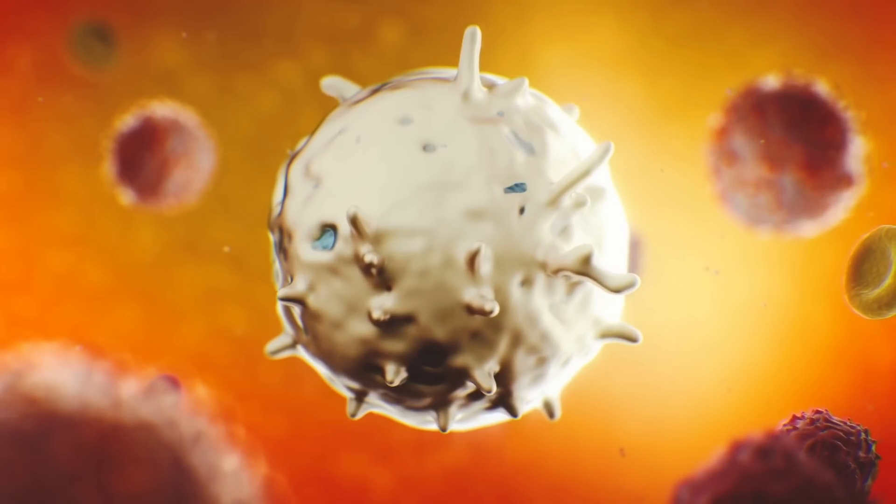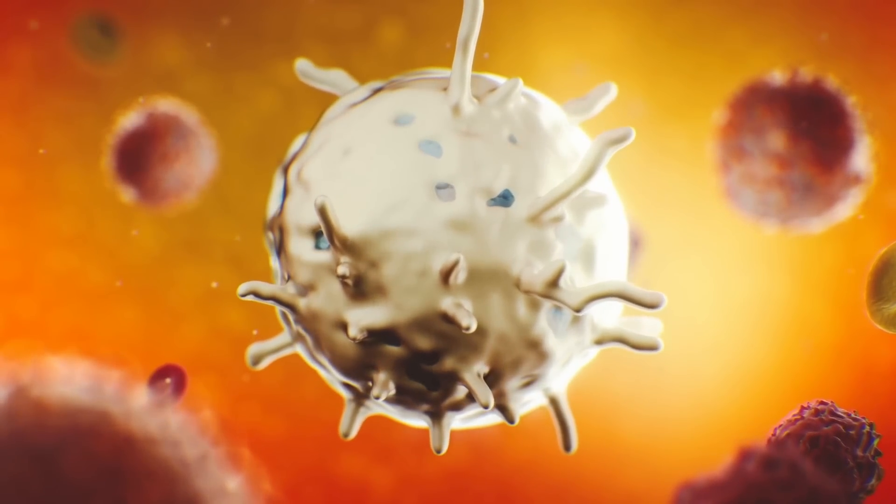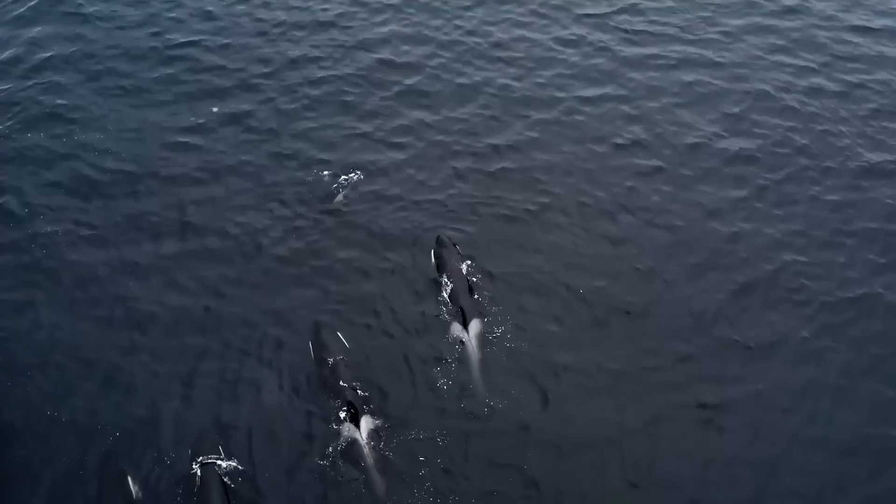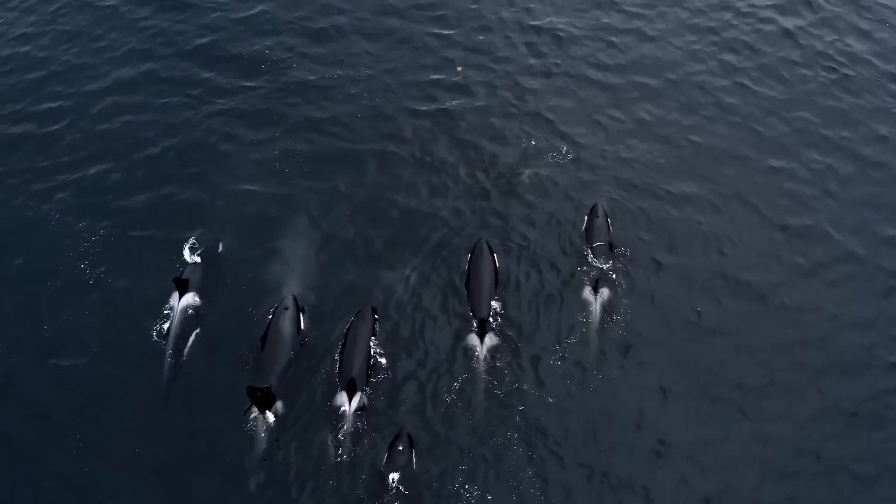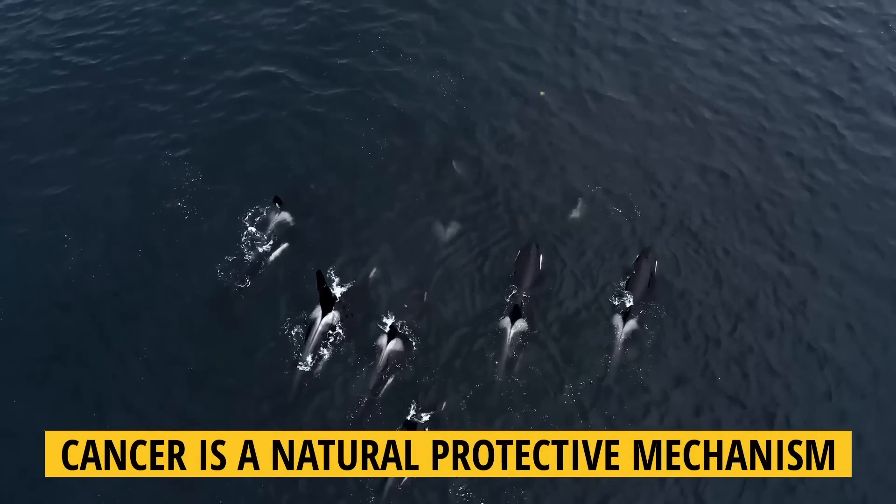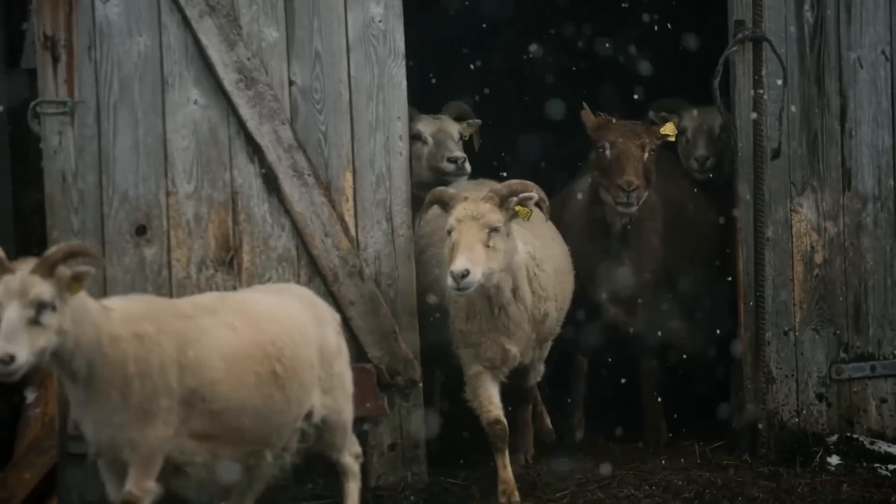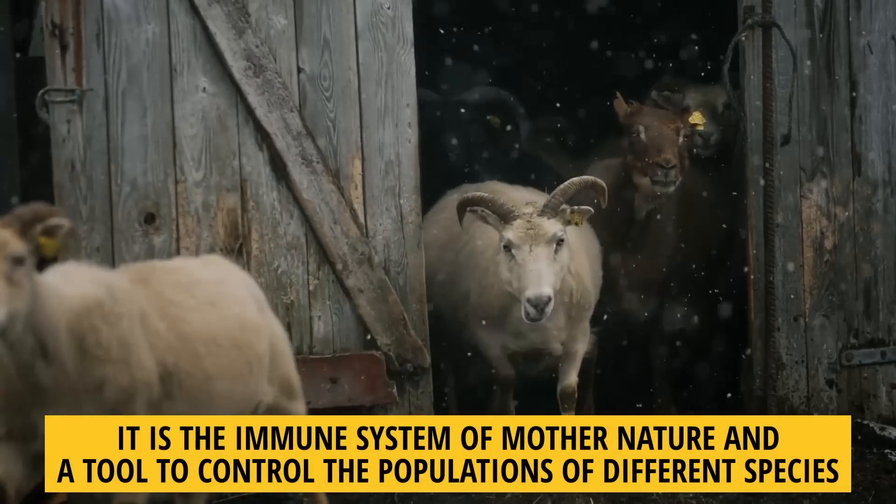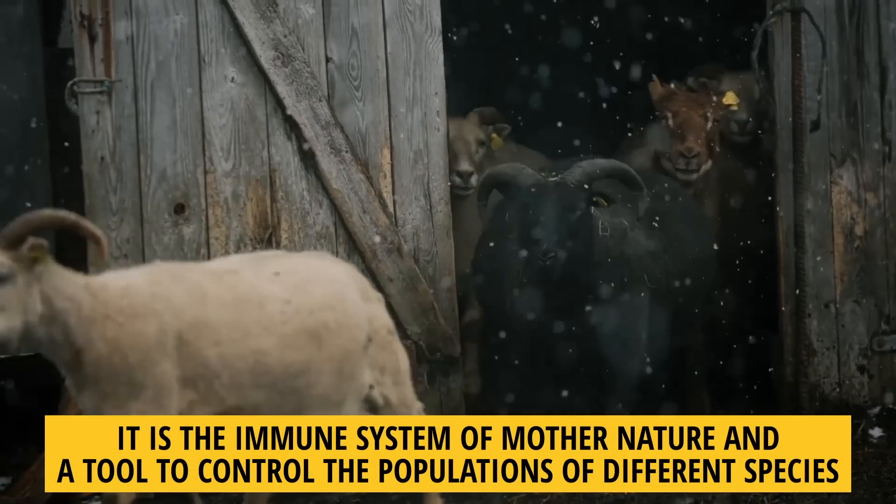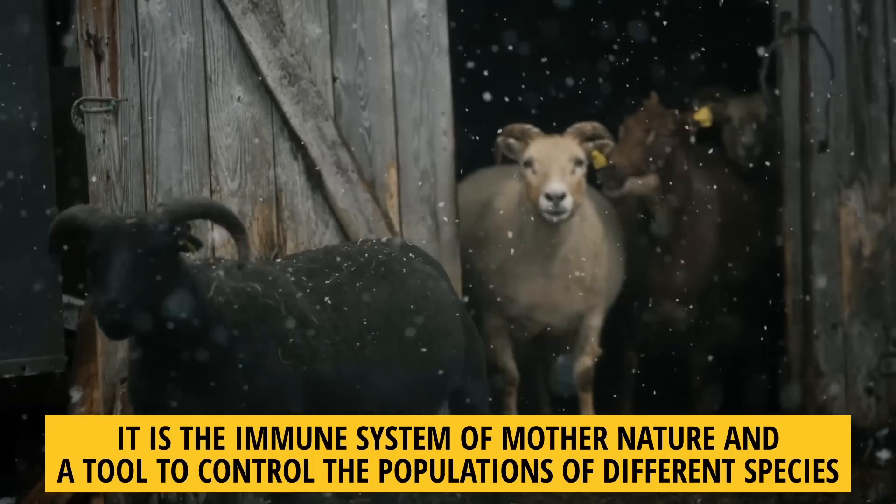Yet, the bodies of some species, like whales and elephants, may be strong enough to withstand it. These three hypotheses have one thing in common. They imply that cancer is a natural protective mechanism. Cancer limits the lifespan of different species. It's the immune system of mother nature and a tool to control the populations of different species.